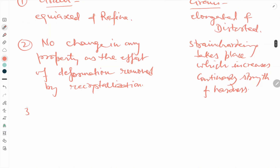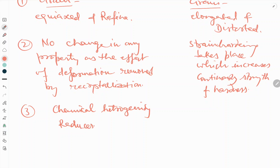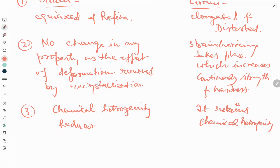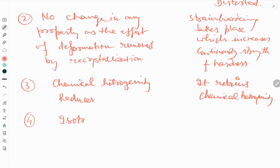The next difference: in hot working, chemical heterogeneity reduces, but in cold working, chemical heterogeneity is retained. Additionally, in hot working an isotropic nature is observed, whereas in cold working an anisotropic nature is observed.